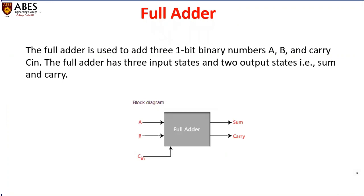So what is full adder? Full adder is basically used to add three one-bit numbers. It has three inputs and two outputs. In half adder, it is used to add two one-bit numbers, so in half adder there are two inputs and two outputs. Likewise, in full adder there are three inputs and two outputs. The three inputs are A, B, and C-in, and the outputs are sum and carry.